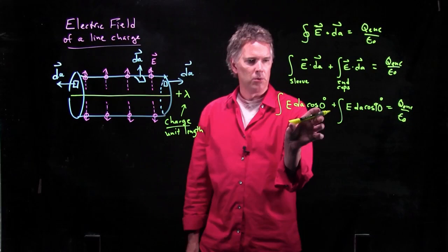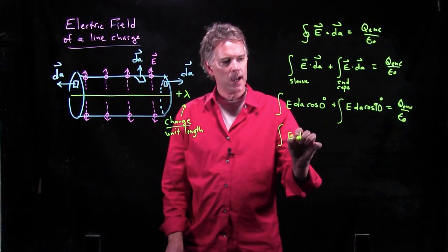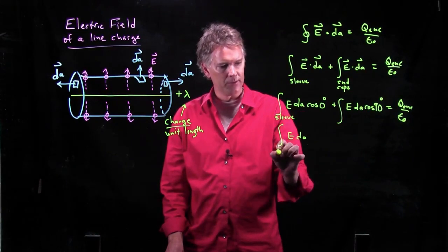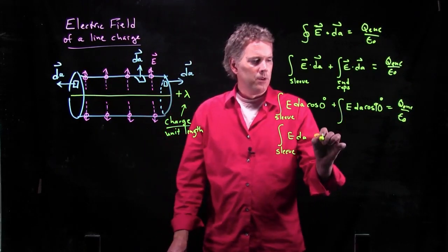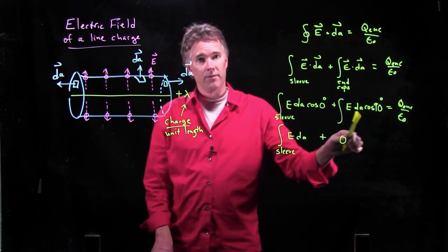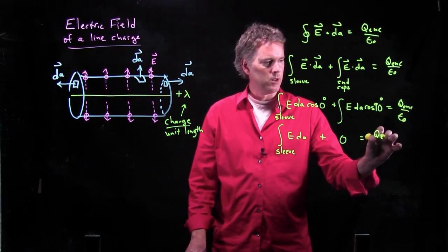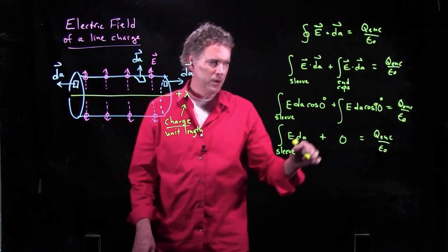All right, this one becomes integral of E dA, and let's just be clear that we're talking about integral over the sleeve now. This one becomes zero because cosine of 90 degrees is zero. It's all equal to Q enclosed over epsilon naught. So let's deal with this, and then we'll worry about Q enclosed.